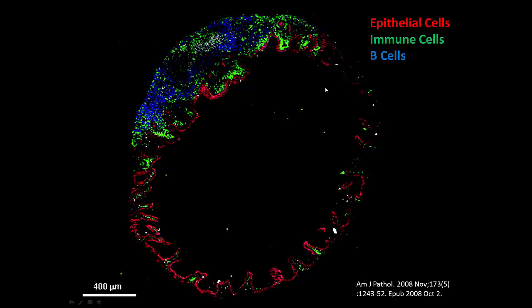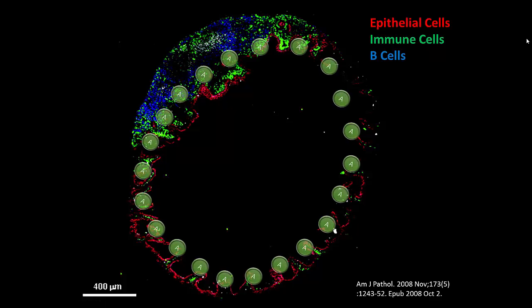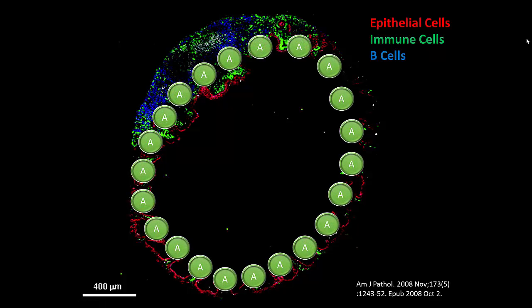Our goal is to get the adrenals fixed, which will allow us to bring IgA levels back on track. This is what provides a barrier between us and the outside world. In case you didn't know, your intestinal tract is actually considered to be part of the outside of your body — the inside of your intestinal tract is considered the outside part of your body.